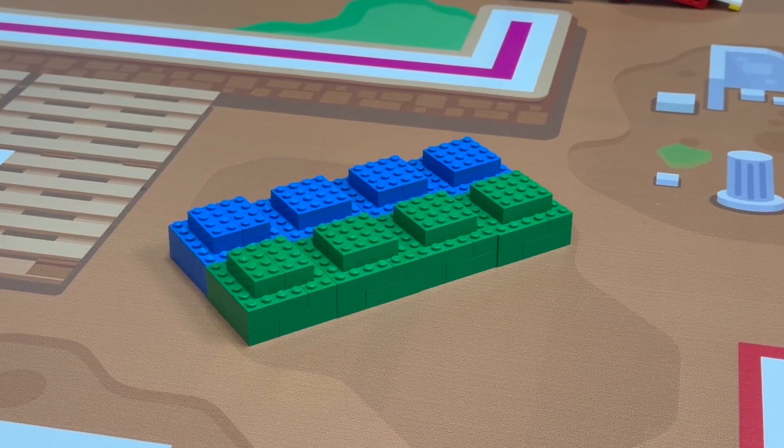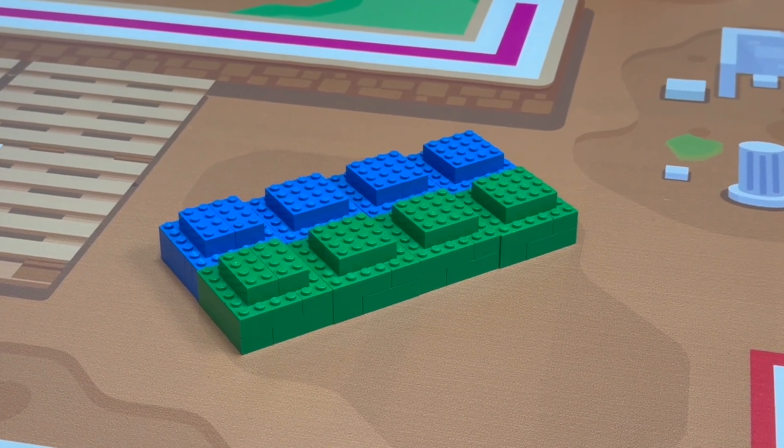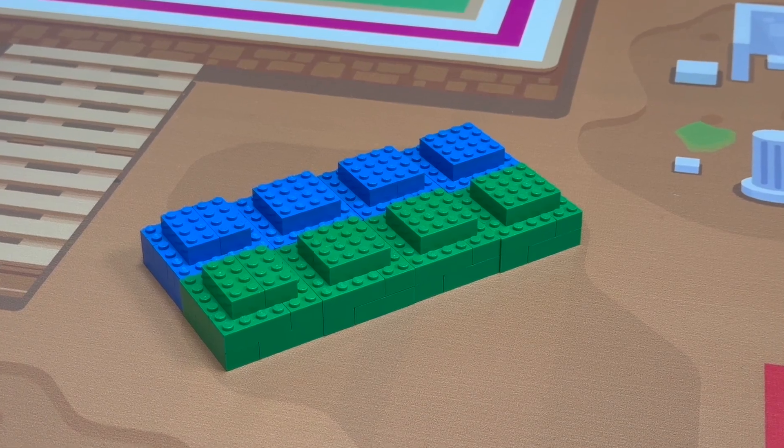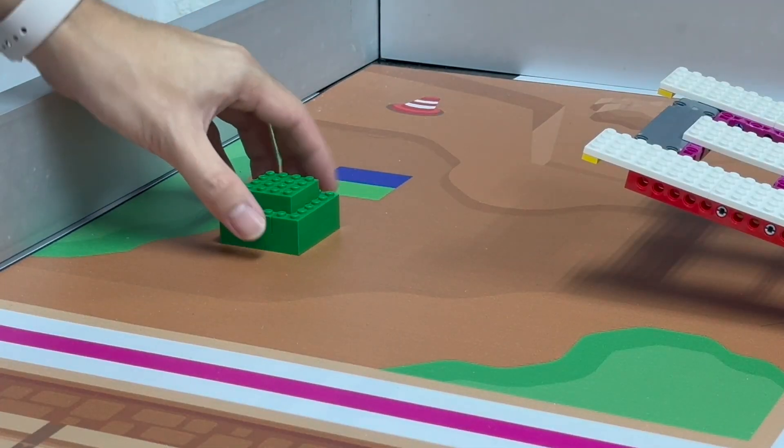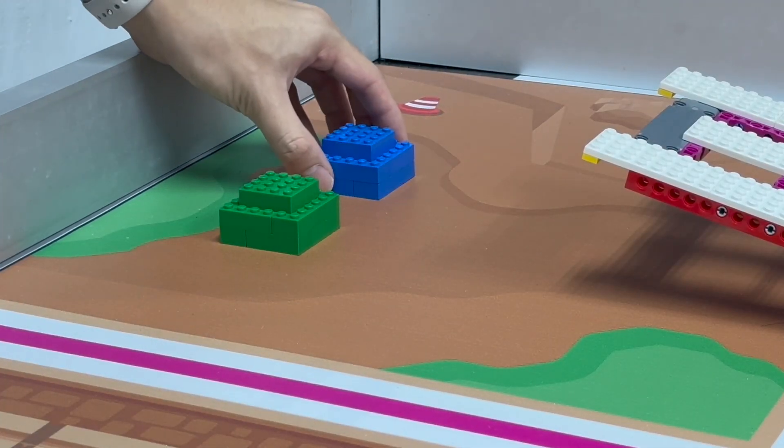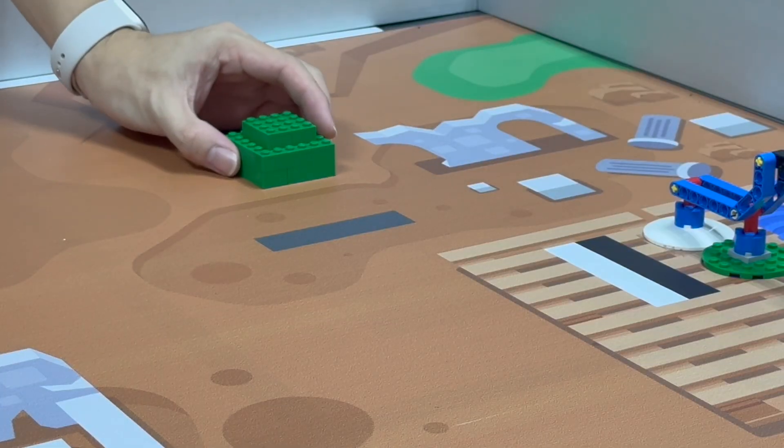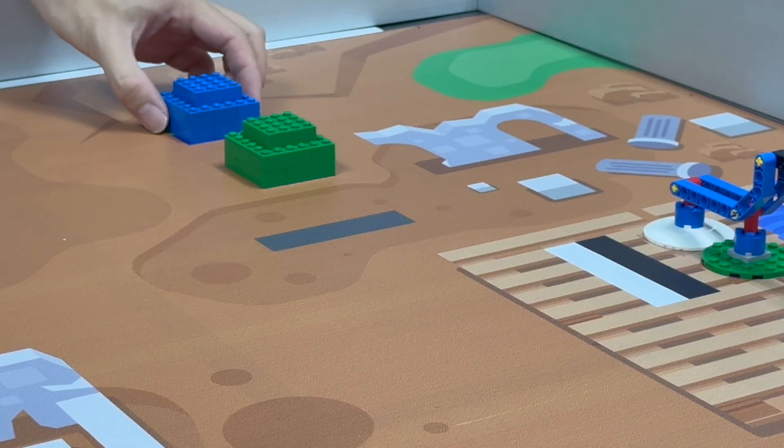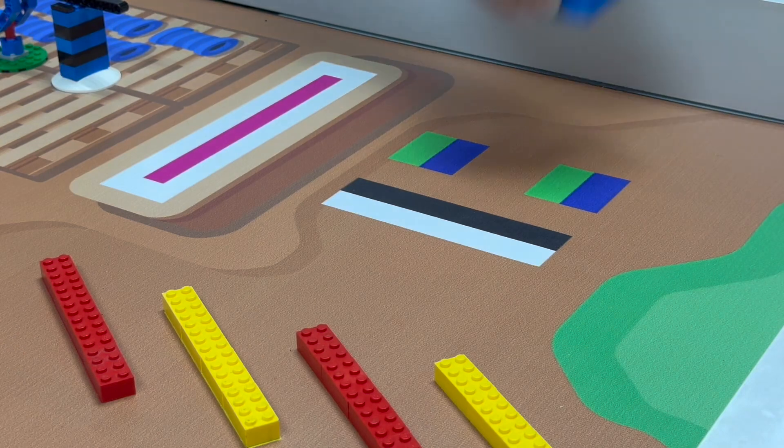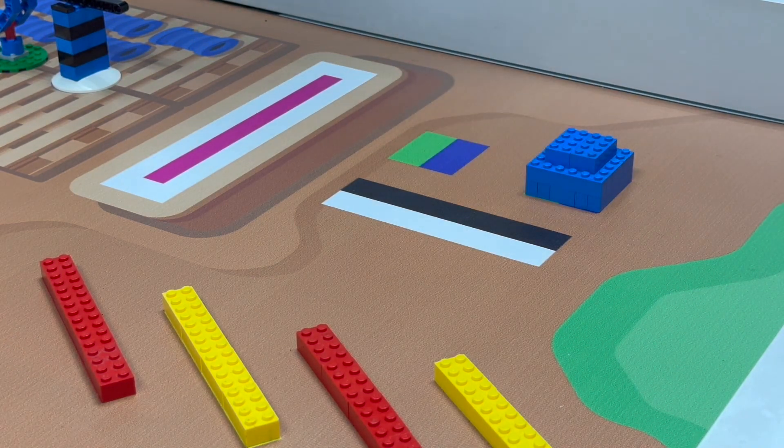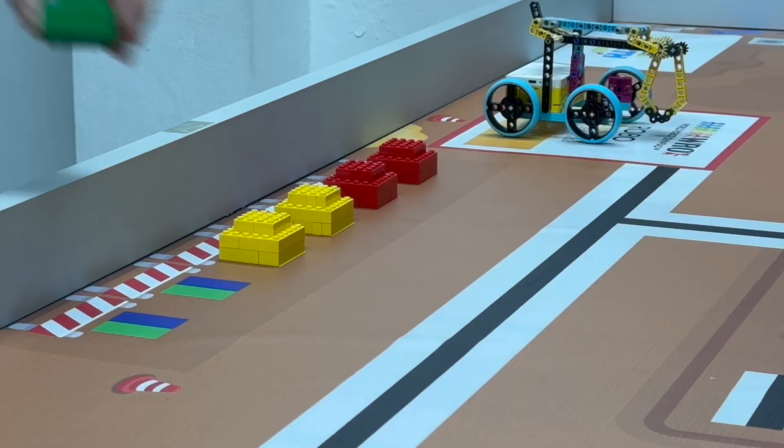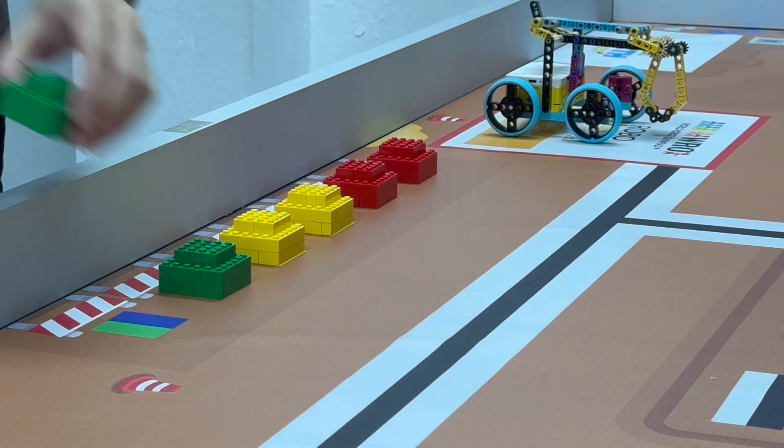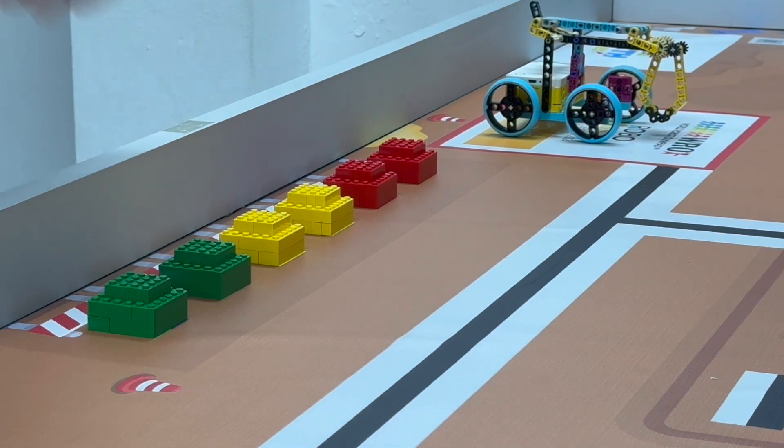4 blue and 4 green house elements will be randomly placed on different positions on the field. Two elements will be placed on the top left corner, two elements on the top right corner, two elements on the bottom right corner, and two elements next to the start area of the competition day.